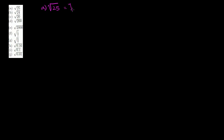a is equal to the square root of 25. That's the same thing as the square root of 5 times 5, which is clearly going to be 5. We're focusing on the positive square root, or the principal root, here.